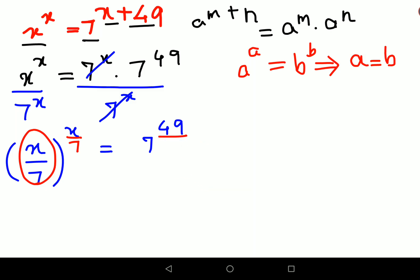What we can get over here is we are taking the 7th root on both sides. So now we can say that x upon 7 the whole raised to x upon 7 equals to 7 raised to 49 over 7, which is 7 raised to 7.